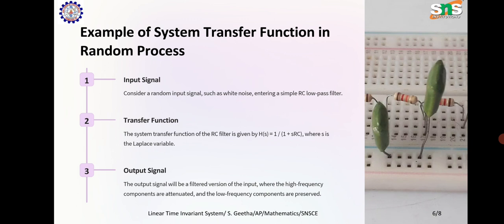Example of transfer function in random processes: Input signal — consider a random input signal, such as Wi-Fi noise, entering a simple RC low-pass filter. Transfer function — the system transfer function of the RC filter is given by H(S) = 1 / (1 + SRC), where S is the Laplace variable. Output signal — the output signal will be a filtered version of the input, where the high-frequency components are attenuated and the low-frequency components are preserved.